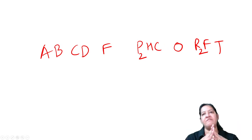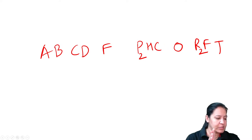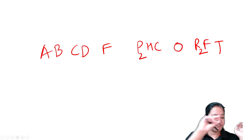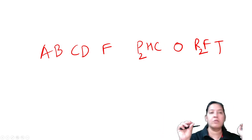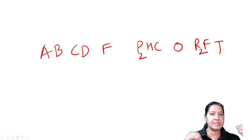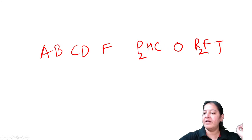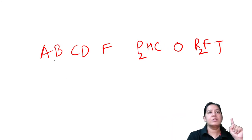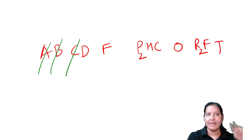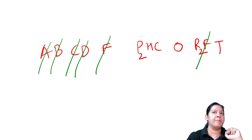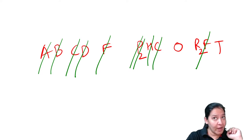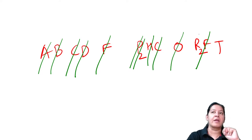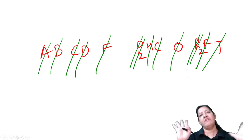The final mnemonic for 14 RNA viruses: A, B, C, D, F (E ki jagah F) - then P, H, C, O, R, F, T. Make P2 and R2. So Arena, Bunya, Calci, Delta, Filo, Flavi, Picorna, Paramyxo, Hepe, Corona, Orthomyxo, Reo, Rhabdo, Toga. Total 14 RNA viruses. Counting them all: total 14 RNA viruses are there.